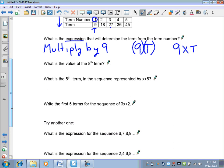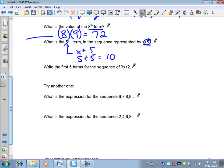You can now calculate the value of the eighth term. So the eighth term is going to be eight times nine. So that's going to be seventy-two. What is the fifth term? Oh, sorry, we're changing gears now. All right. Here's another expression. Completely different question. What is the fifth term in the sequence represented by x plus five? Well, this here is our x, and we're adding five. So it's going to be x plus five. Since we know that the x is a five, we know that it's going to be ten.